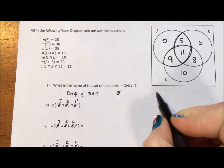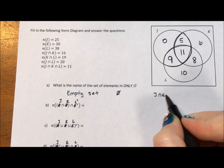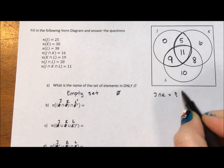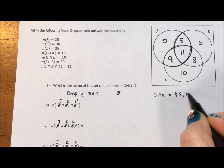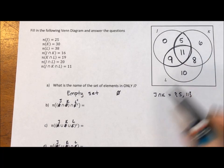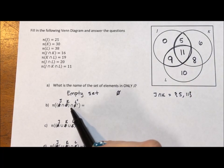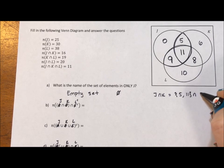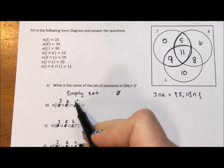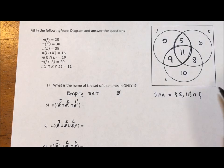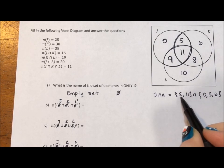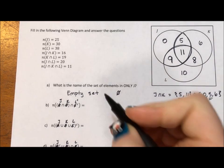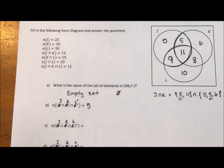So the intersection of J and K is these two regions, the region that has five elements and the region that has 11 elements. We want the intersection of that with L complement, everything that isn't L. Well, everything that isn't L is the 0, the 5, and the 6. And since we're looking for the intersection, what's the same is the 5. So this has five elements.